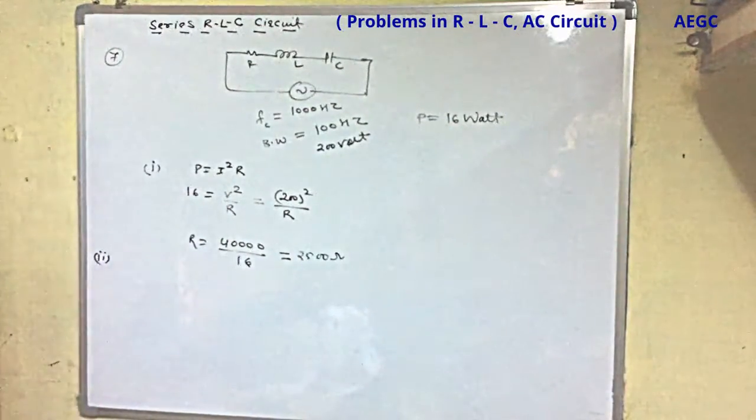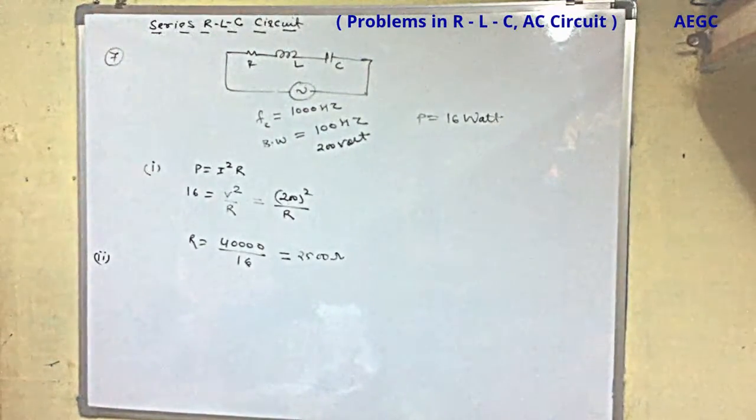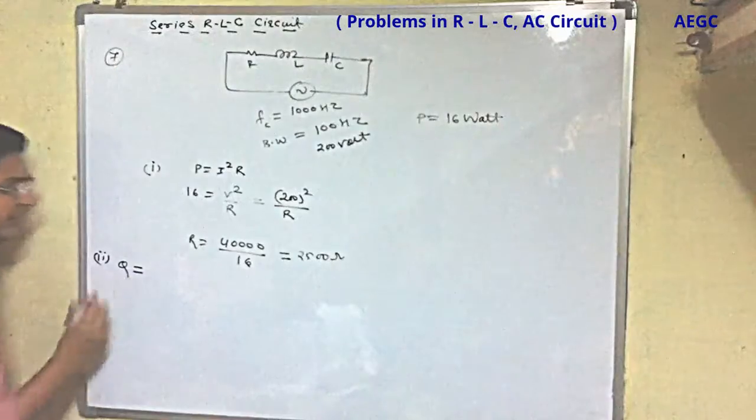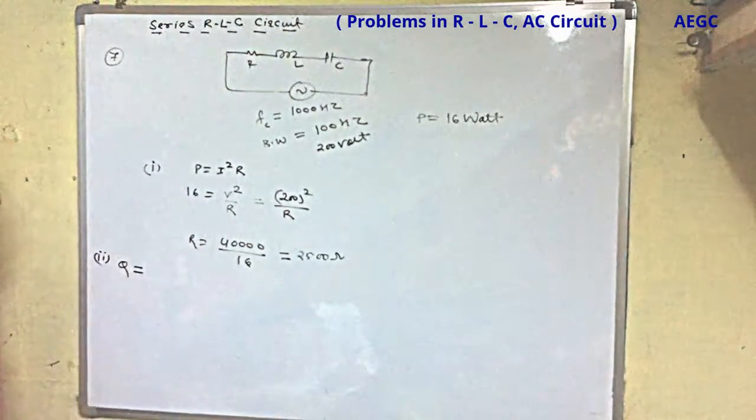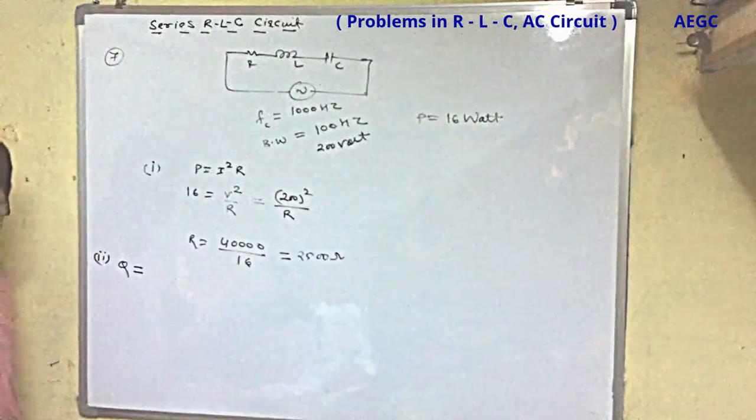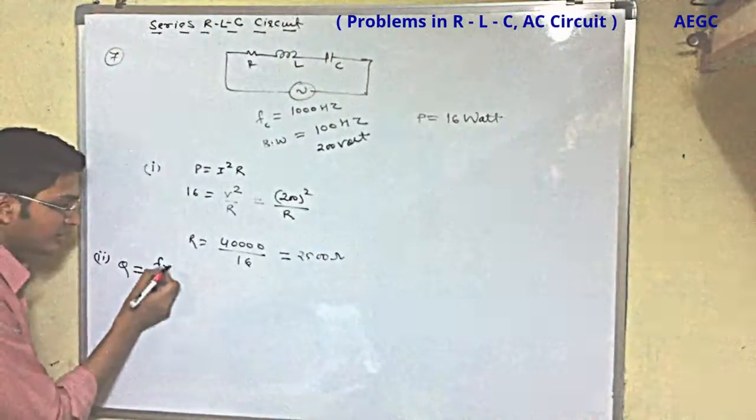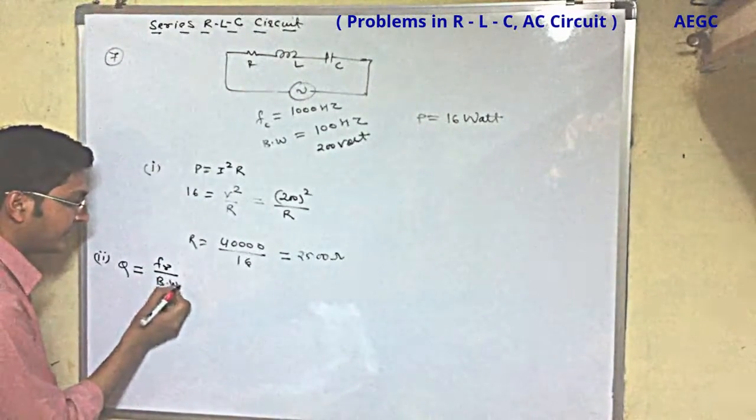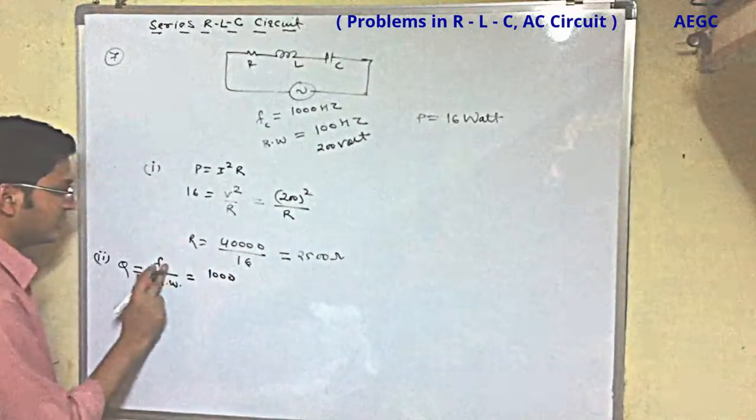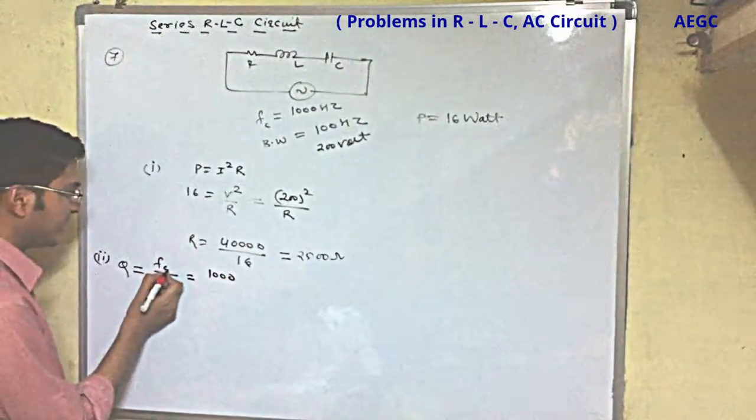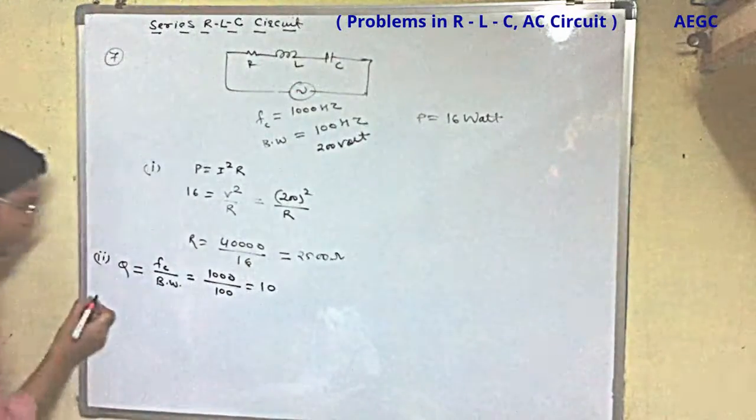The second part is the quality factor. What is the quality factor? The quality factor is the voltage across inductor and capacitor divided by applied voltage. We have learned resonating frequency divided by bandwidth. Resonating frequency is 1000, fc is 1000, divided by 100. Quality factor is 10.